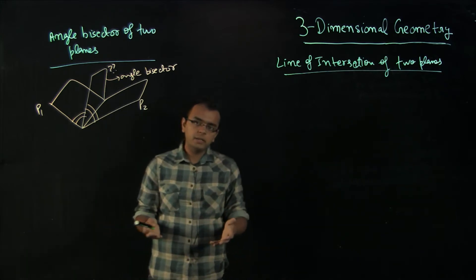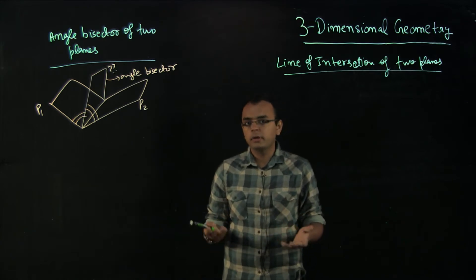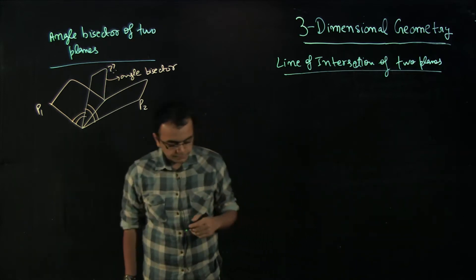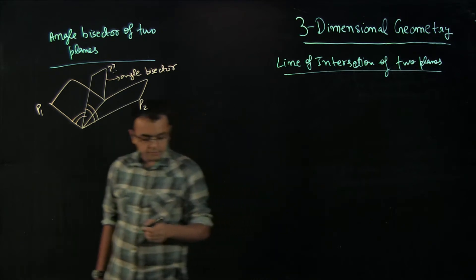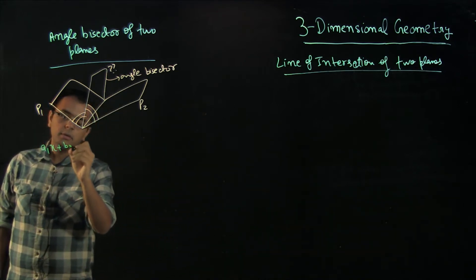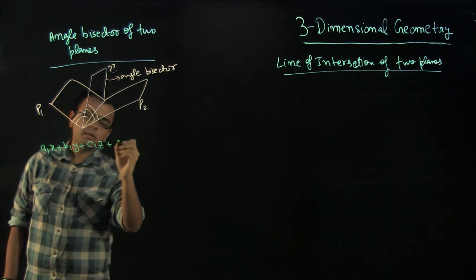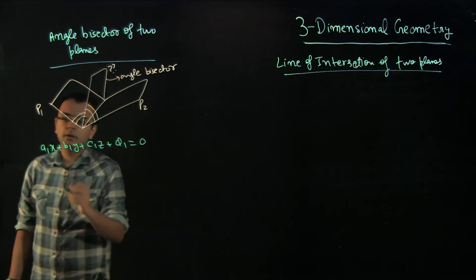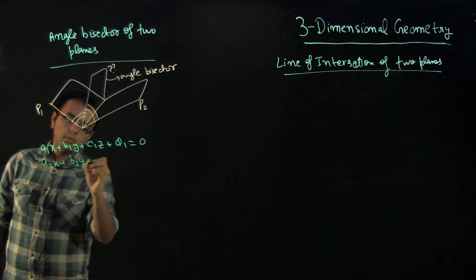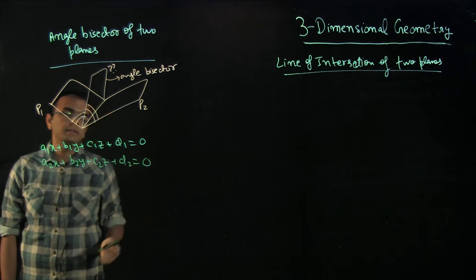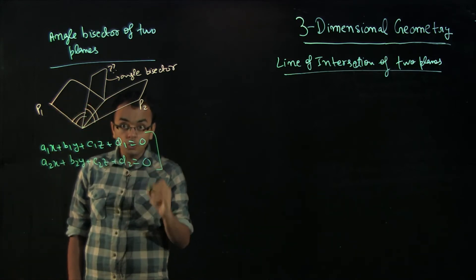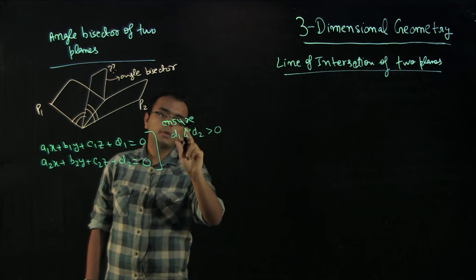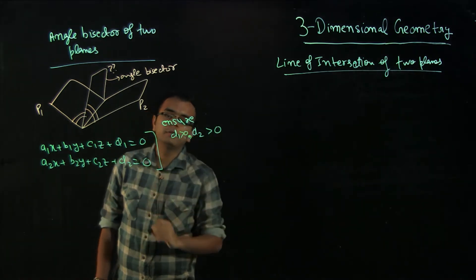There are two angles, obtuse and acute. To find which is which, just take the dot product with N1 and N2 — you will get an angle either obtuse or acute, and the other is 180 minus that. Now, when writing the equations, ensure that D1 and D2 are greater than 0. Take the constant to the right-hand side and multiply by negative if needed to make this greater than 0.